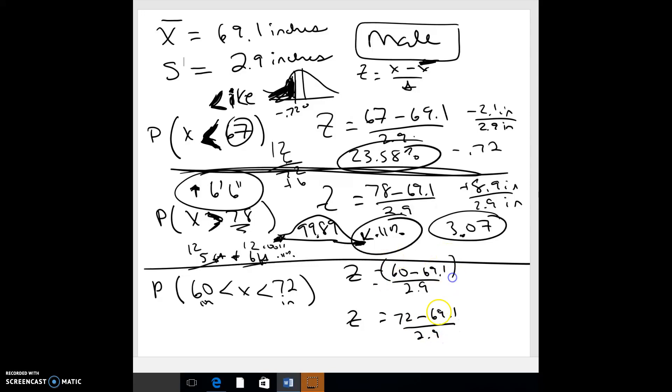So 60 minus the mean divided by the standard deviation, and 72 minus the mean divided by the standard deviation. You have to do order of operations, so you got to make sure you get an answer to that before you divide. So what is it? Negative 9 divided by 2.9. I have 9, which is the difference, negative 9 divided by 2.9, which is your standard deviation. Your z-score doesn't have a unit, so that's 3.10, and that's negative.